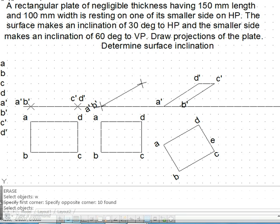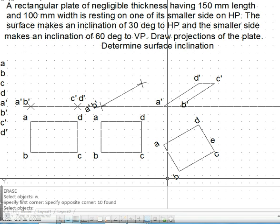To get the surface inclination we need a line view in top view. For that, what we need to do is follow a procedure if we want the line view in top view.